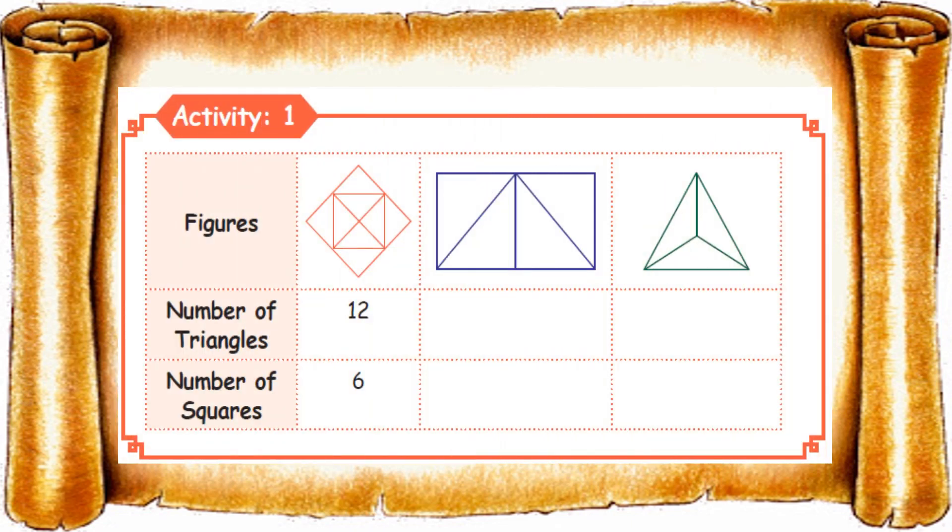Activity 1. From this figure we are going to find the number of triangles and number of squares. The first one has 12 triangles and 6 squares. Let me show you the triangles: one, two, three, four, inside five, six, seven, eight. Focus on the black color, that's nine, then green color eleven, then twelve.